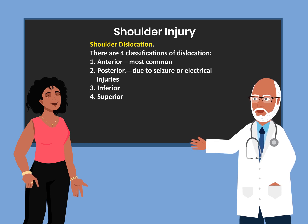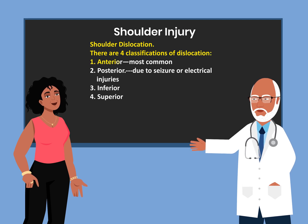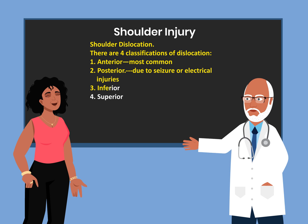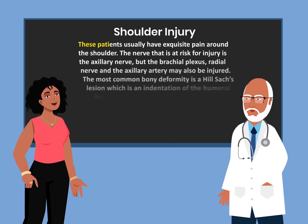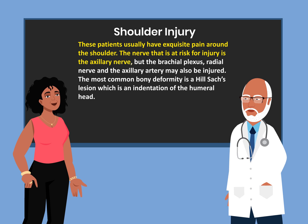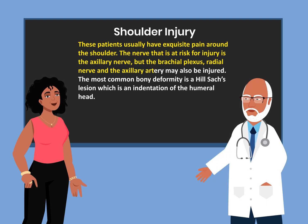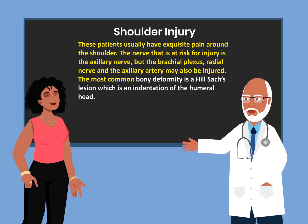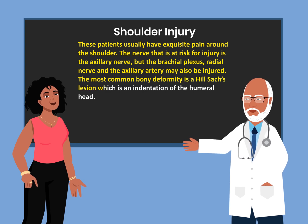Let's talk about shoulder dislocation. There are four classifications: anterior, which is the most common; posterior, which is rare and is due to seizures or electrical injuries; inferior; and lastly superior. These patients usually have exquisite pain around the shoulder. The nerve at risk for injury is the axillary nerve, but the brachial plexus, radial nerve, and axillary artery may also be injured. The most common bony deformity is a Hill-Sachs lesion, which is an indentation of the humeral head.